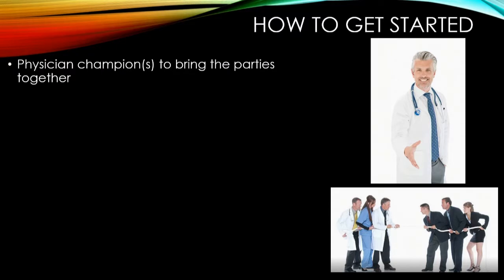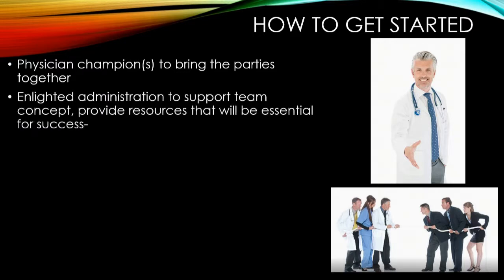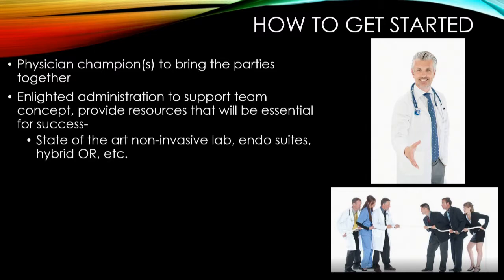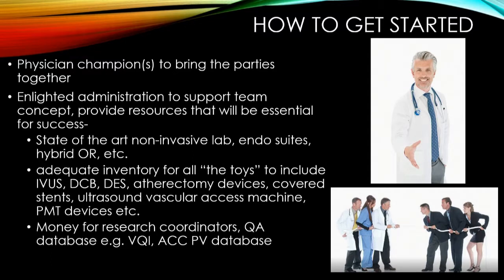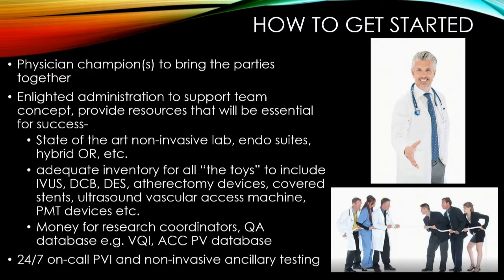How did we get started? I was the physician champion and sort of strong-armed everybody into getting together in a room to discuss the concept. Fortunately, we had a relatively enlightened administration that was very supportive, and you need them to provide you with the resources invaluable to take care of these patients. You need state-of-the-art labs, endosuites, and hybrid ORs. From a technical standpoint, you need all the tools — balloons, stents, atherectomy devices, ultrasound, and pharmacomechanical thrombolysis devices. You also need money — a fair amount of money — for research coordinators and a QA database. In our case we use the VQI database, but the point is you need to track your outcomes. Importantly, CLI doesn't know bankers' hours, so you have to have 24/7 on-call interventionalists and non-invasive ancillary testing available at a moment's notice.